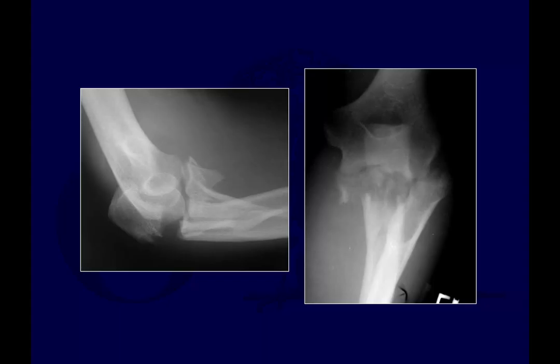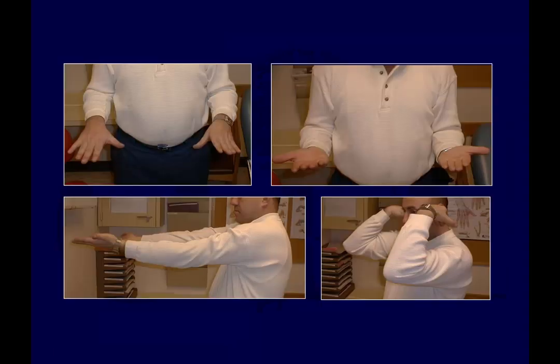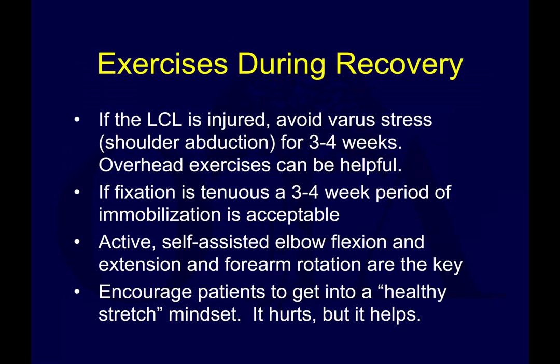Here is another case of proximal ulna fracture dislocation where the radial head appeared fractured and dislocated. In this case, the radial head needed to be replaced, then the proximal ulna was repaired with standard osteosynthesis techniques ensuring capture of the coronoid, achieving a relatively satisfactory, stable result. Additional cases like this can be found in the video on elbow fracture dislocation case presentations on the OrthoClips website.